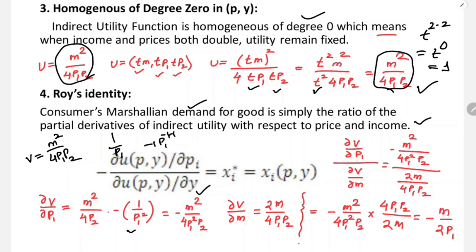Taking the derivative of V with respect to M: ∂V/∂M = 2M / (4·p1·p2) = M / (2·p1·p2). Applying Roy's Identity: -(∂V/∂p1) / (∂V/∂M) = [M²/(4·p1²·p2)] / [M/(2·p1·p2)] = M/(2p1).